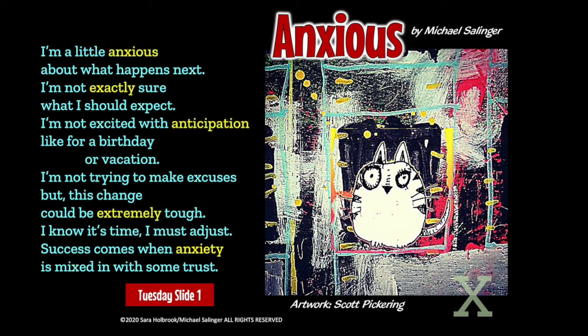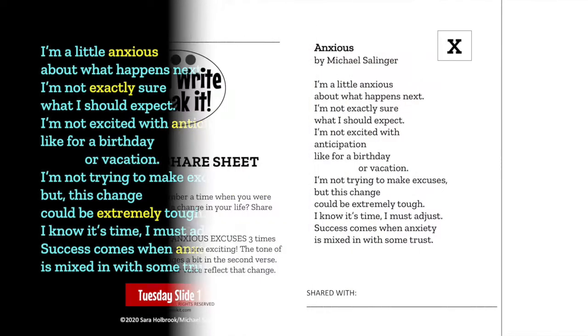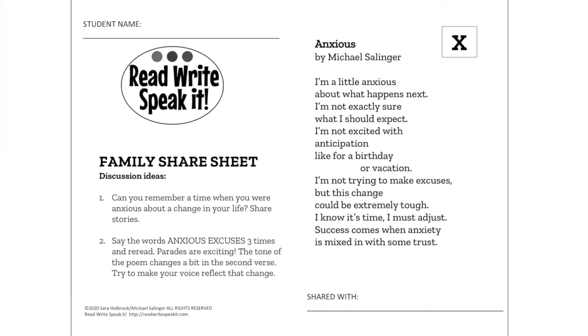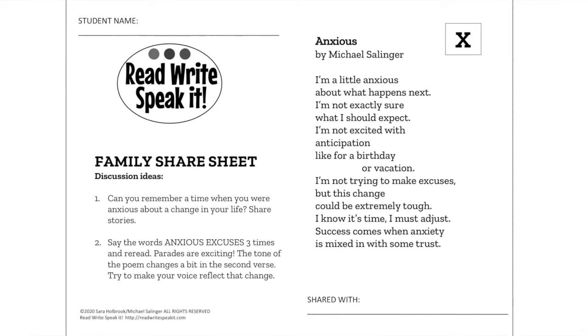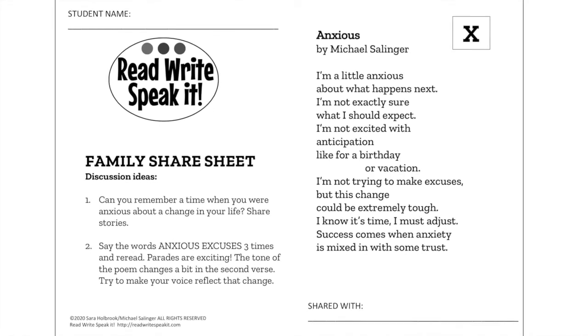On Tuesday, we would read the poem again and really focus on those highlighted vocabulary words. In the lesson plan, we have lots of ideas on how to take those words down off the word wall and put them into action and conversation. Also on Tuesday, we send home this family share sheet. This is the only homework for the week — the student is to read this poem aloud to another human being.